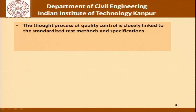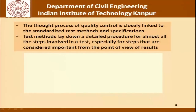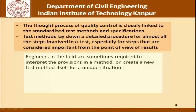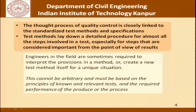What we had said last time was that the thought process of quality control is closely linked to standardized test methods and specifications, and test methods lay down a detailed procedure for almost all the steps involved in a test, especially for tests that are considered important from the point of view of results. We had also said that engineers in the field are sometimes required to interpret the provisions in a method or create a new test method itself for a unique situation at that particular site, for that particular material. This decision cannot be arbitrary and must be based on principles of known and relevant tests and the required performance of the product or the process involved.